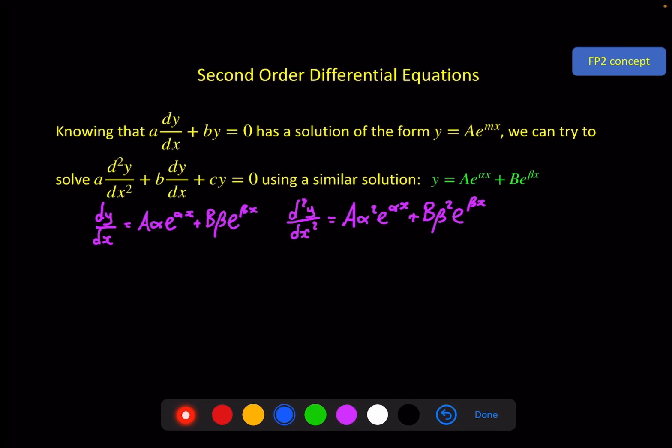Now I can put these into the equation and that will give us a α² e^(αx) plus b β² e^(βx) plus b lots of a α e^(αx) plus b lots of b β e^(βx) plus c lots of a e^(αx) and c lots of b e^(βx) must equal zero.